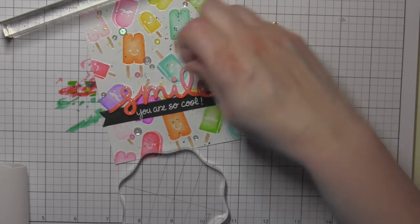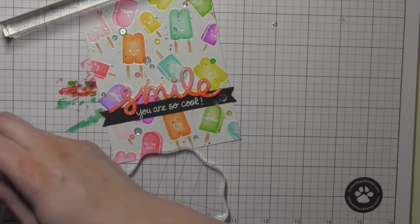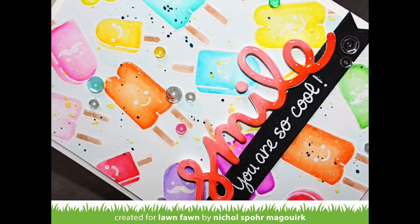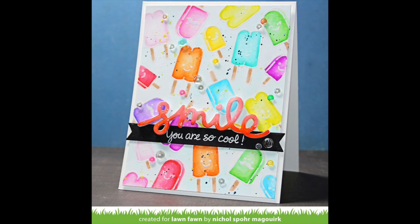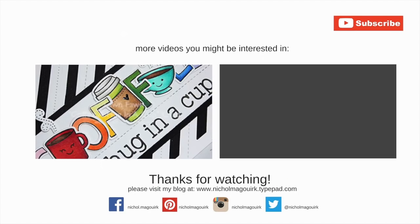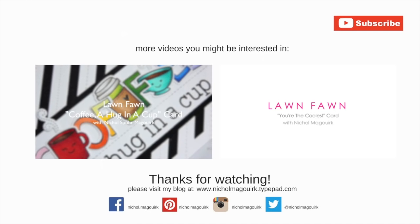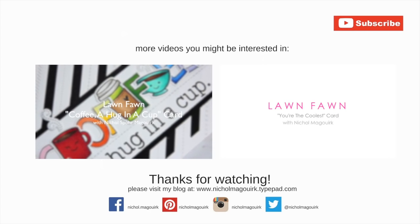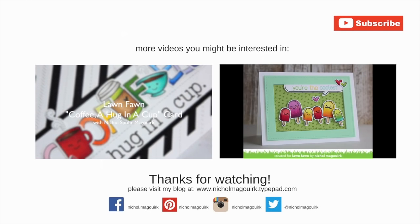Thanks for watching this video showcasing Lawn Fawn stamps and dies used to create watercolored popsicles. The supplies I've used to create this card are listed and linked below the video here on YouTube. Please subscribe for weekly card making and stamping videos. Here are a couple more Lawn Fawn fun cards you might be interested in. Thanks for watching and we'll catch you next time.